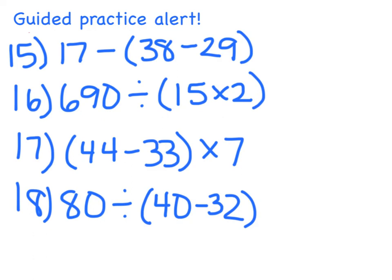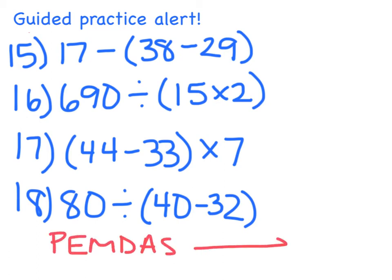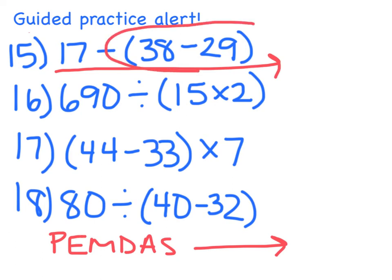Please try these four problems, including parentheses, in your homework notebook. Don't forget, always follow Please Excuse My Dear Aunt Sally, and work from left to right. For example, in our first problem, 17 minus parentheses 38 minus 29 parentheses — you will work from left to right, but you will solve 38 minus 29 first. Then you will subtract that difference from 17. Press pause, complete your work, and come back for one last idea in this chapter.